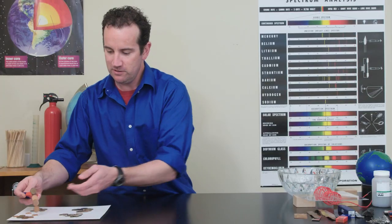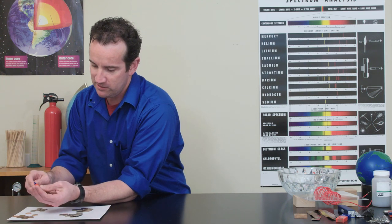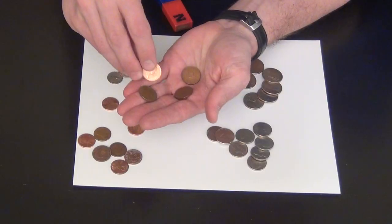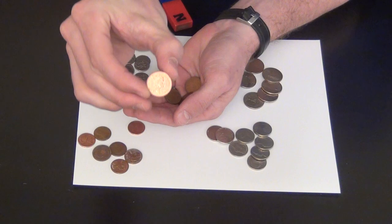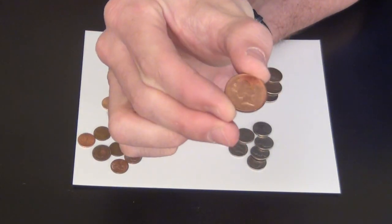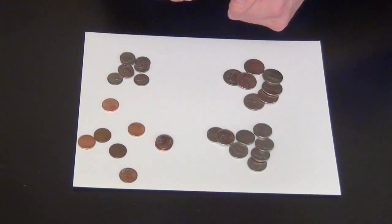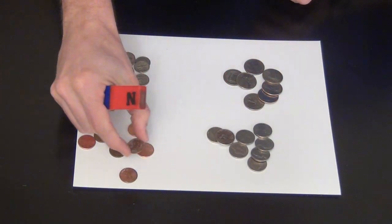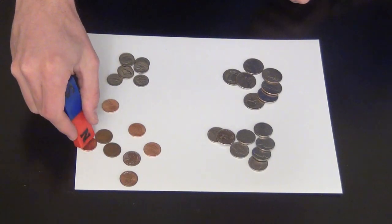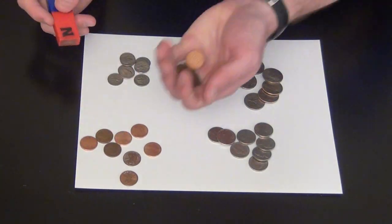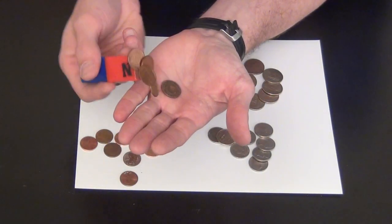Wait a second. This is not an ordinary penny. This is a British penny. There's the Queen of England on it. A Queen of England penny is attracted to a magnet, but an Abraham Lincoln penny is not. Those are not made of iron. The British pennies contain iron.